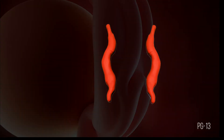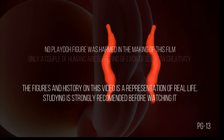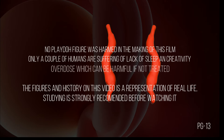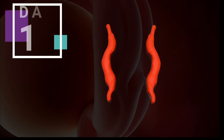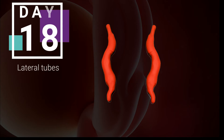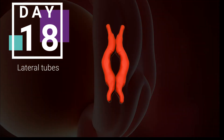Hello, in this video we will be discussing and demonstrating the folding of the primitive heart tube. We begin around day 18 of development, when the cardiogenic region, which contains the angiogenic cells, develops into two separate lateral endocardial tubes.